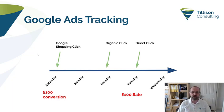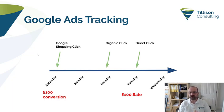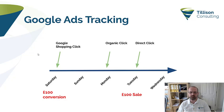In this model, we have our user clicking a Google Shopping ad on Saturday. Nothing happens on Sunday. On Monday, they come back to the site through an organic click, and then on Tuesday they actually buy something. So our sale, our conversion, is £100 and it happens on Tuesday.